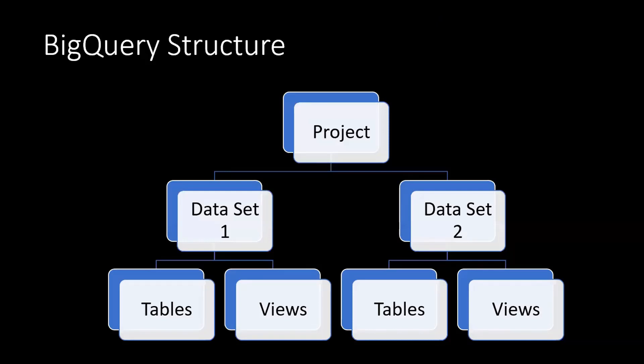Now let's talk about BigQuery structure — we'll go into BigQuery in just a few minutes so I can show you. In BigQuery, you have a project, which is where you can have all your objects: datasets, tables, views, et cetera. Within a project, you can have multiple datasets, which are a way to organize your data. And within a dataset, you can have multiple tables and views.